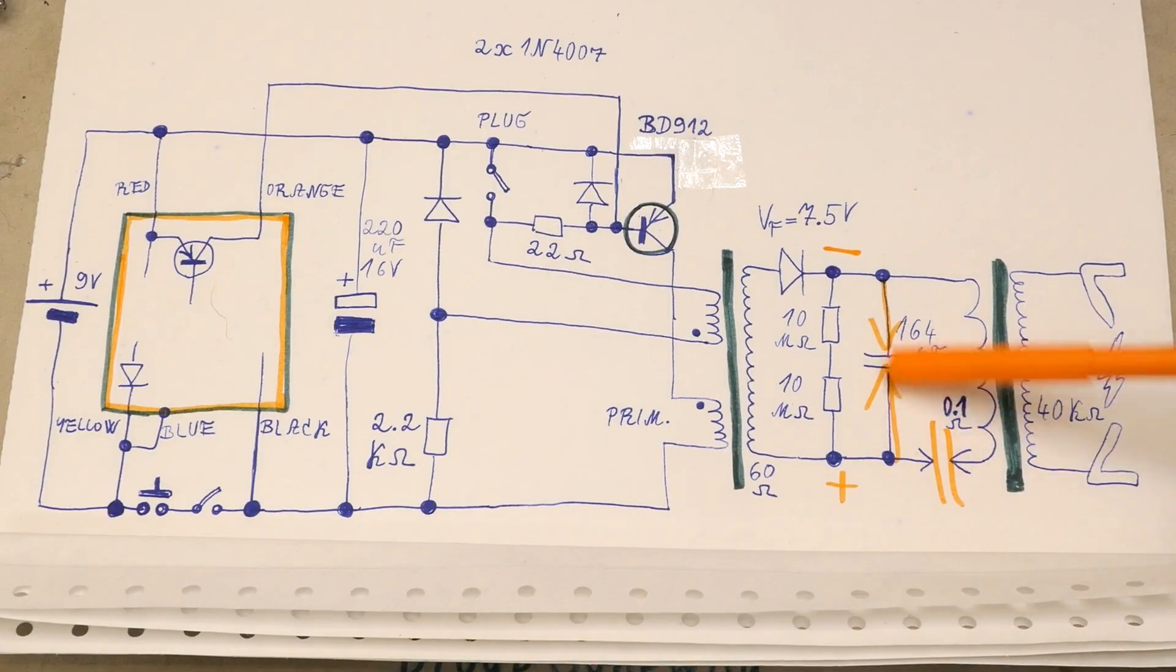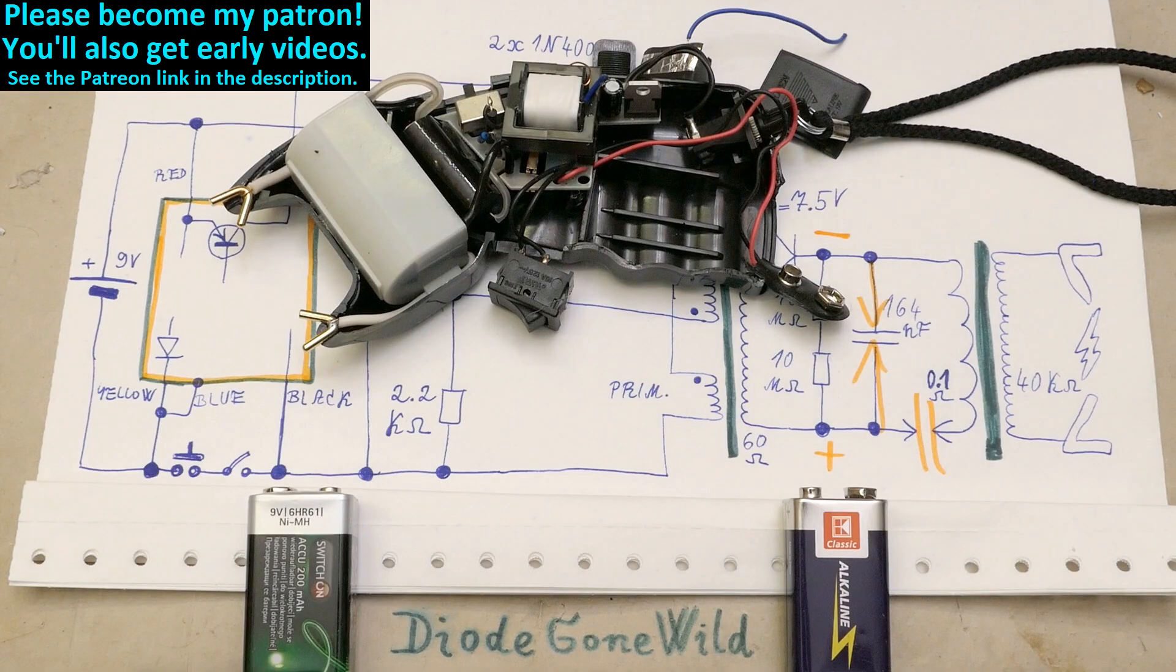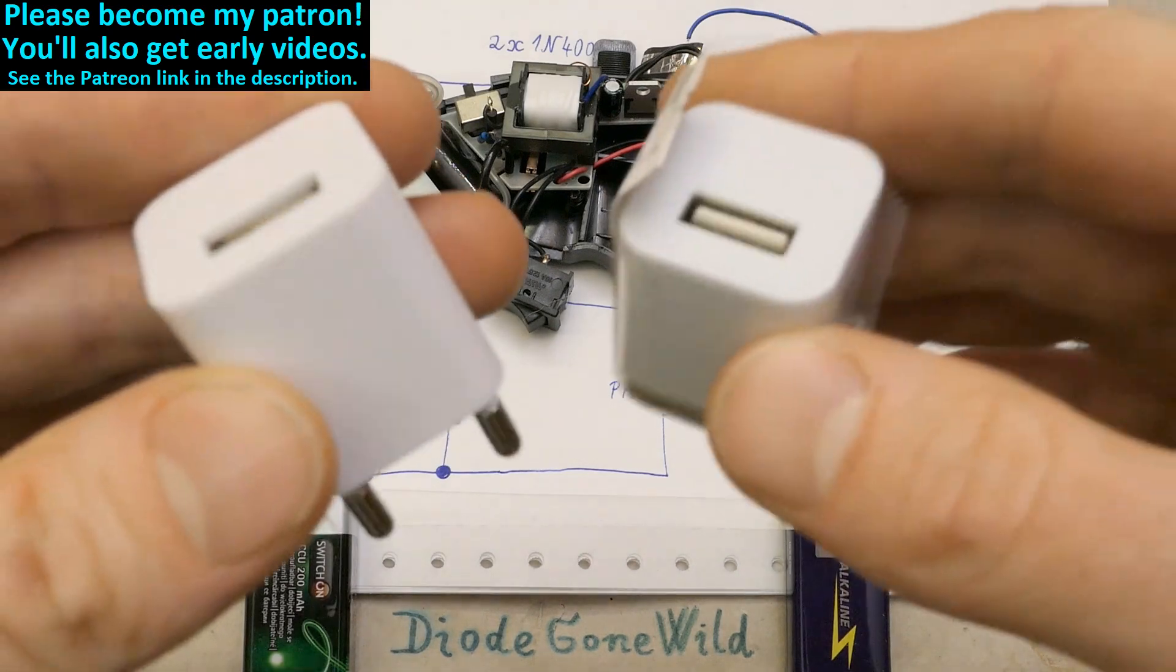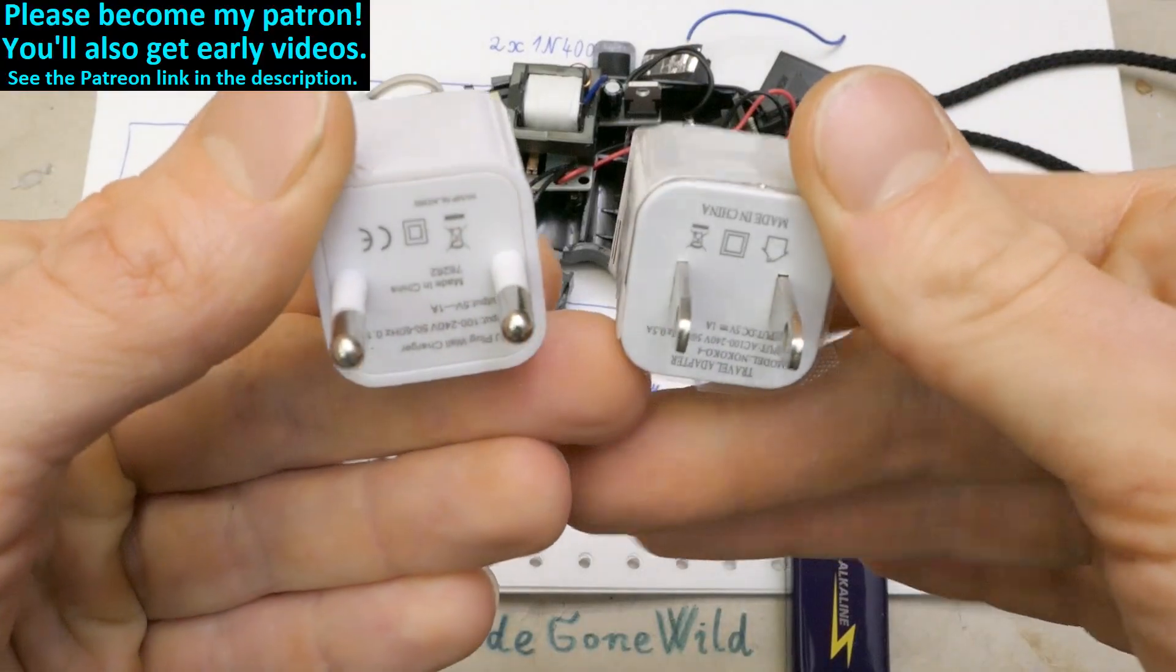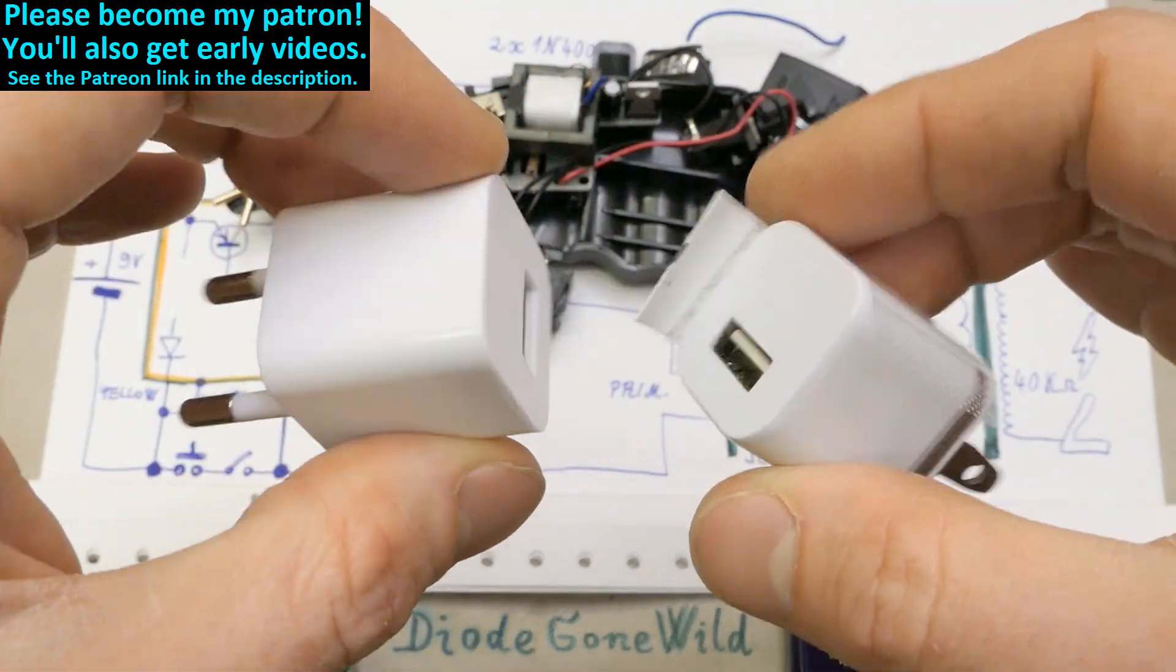But maybe it's so lossy that it doesn't even make damped oscillations, just a pulse in one polarity. But I'm not sticking any oscilloscope into this section. So that's it and thanks to all of my patrons on Patreon. I really appreciate your support. You can also become my patron to support my channel and get early videos. In the next episode I plan to take a look inside those very questionable USB phone chargers.